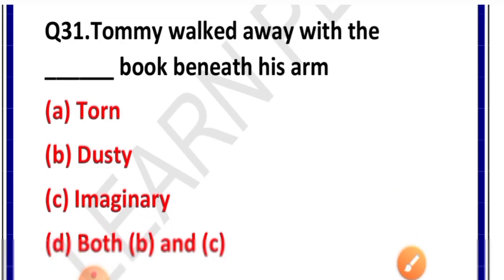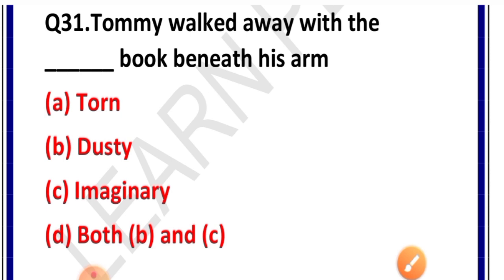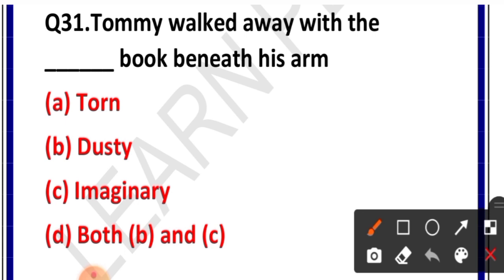Question number 31: Tommy walked away with the book beneath his arm — what word will come here? Options: A. ton, B. dusty, C. imaginary, D. both B and C. Correct answer is option B — dusty. Tommy walked away with the dusty book beneath his arm.